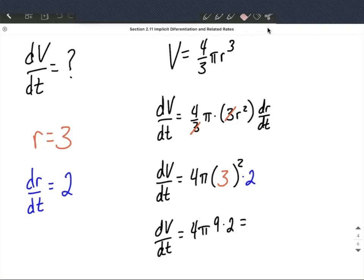Okay so 4 times 9, 36 times 2 makes 72π is a nice exact answer.